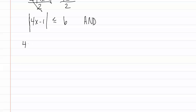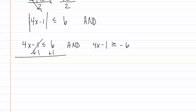We start by writing it just as shown without the absolute value symbols. We write the word and, then write it again, flipping the symbol and changing the sign on the number. Then we solve each inequality. Add one to each side and we get four x is less than or equal to seven. Divide each side by four and we get x is less than or equal to seven-fourths.